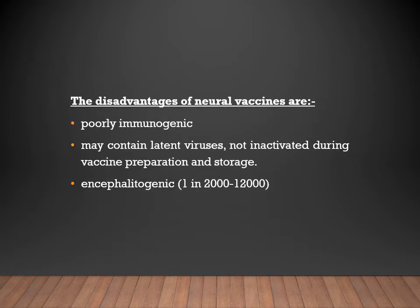Neural vaccines have several disadvantages: they are poorly immunogenic, meaning antibody levels achieved are very low and often do not reach the target. They may contain latent virus that was not properly inactivated during preparation or storage. Most importantly, they can cause encephalitis. Due to these serious side effects, neural vaccines are not used in developed countries.